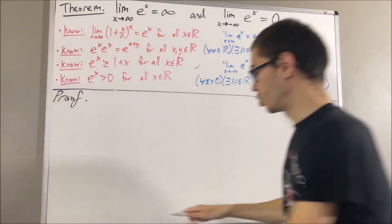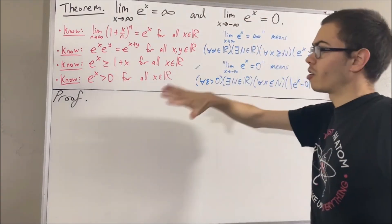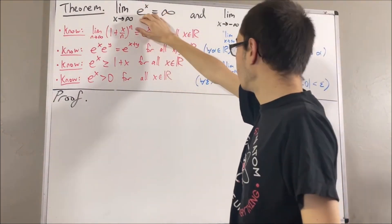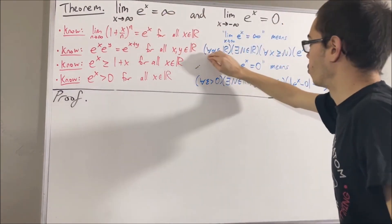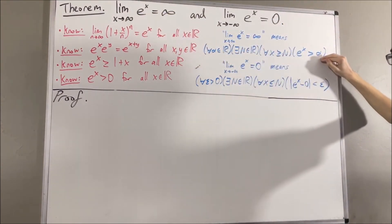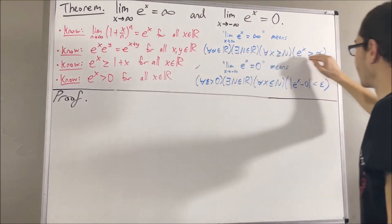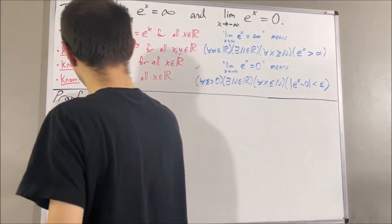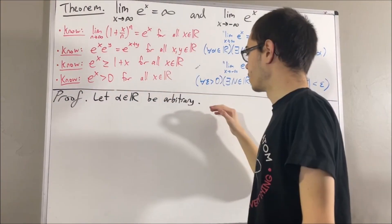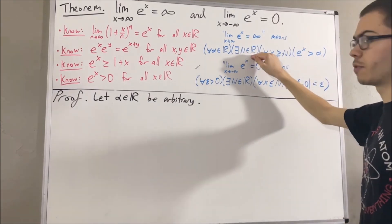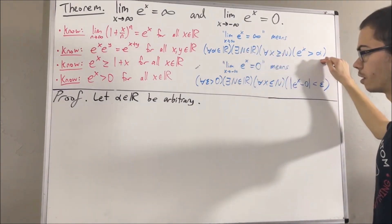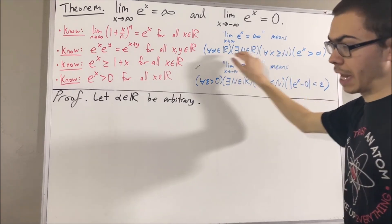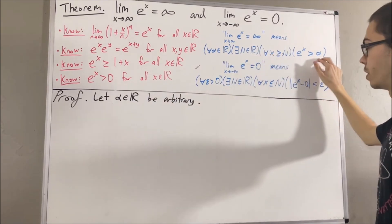Now let's get into proving these two things. We'll start by proving the first limit. To prove this limit really means we're trying to prove the formal statement. Since we're trying to prove a statement about every real number alpha, let's give ourselves an arbitrary real number alpha. From here, we want to find a real number capital N such that the statement is true. The claim is, if we take capital N to be alpha, then this statement will be true.